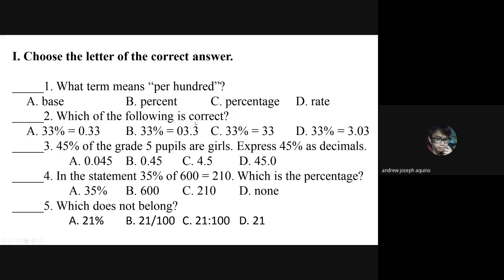Letter A: base. Letter B: percent. Letter C: percentage. Letter D: rate. Number two: which of the following is correct? Letter A: 33 percent equals 0.33. Letter B: 33 percent equals 3.3. Letter C: 33 percent equals 33. Letter D: 33 percent equals 0.03.